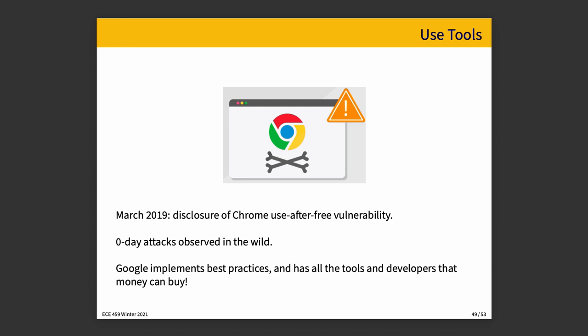Here's something that happened in March of 2019: there was a disclosure of a Chrome use-after-free vulnerability. Memory that had been deallocated was used after it had been deallocated, and this resulted in a vulnerability. There existed zero-day attacks in the wild.